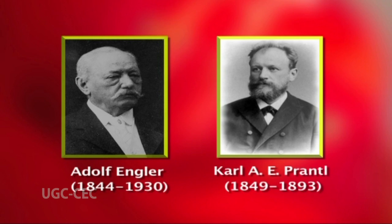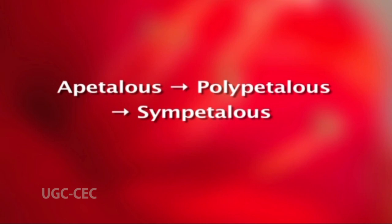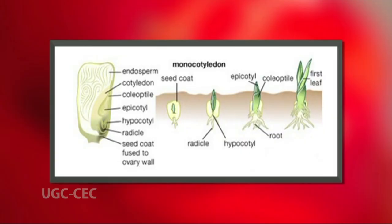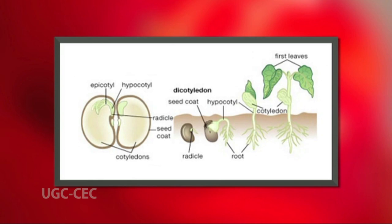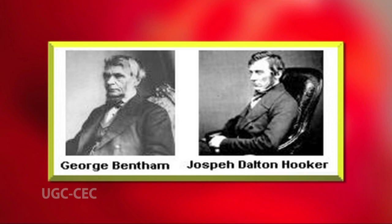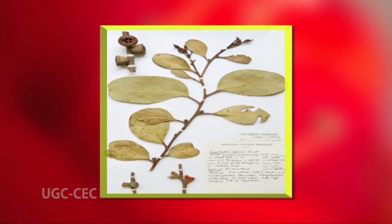The evolutionary trends suggested by Engler and Prantl are: apetalous to polypetalous to sympetalous; actinomorphic to zygomorphic; unisexual to bisexual; hypogynous to epigynous. A significant feature is that they placed monocotyledons before dicotyledons, considered orchids more advanced than grasses, and apetalous catkin-bearing dicotyledons as primitive. However, these views are not acceptable to most recent phylogeneticists. The unification of polypetaly and apetaly, recognized separately by Bentham and Hooker, was a forward step.